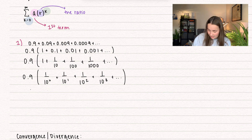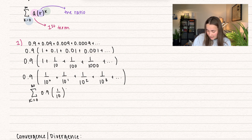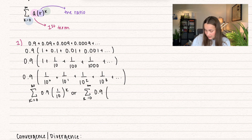From here, we can go ahead and write this out. So we have the summation k going from 0 to infinity, and that's going to be 0.9 multiplied by 1 over 10 to the power of k. Another way you can write this is the summation k going from 0 to infinity of 0.9 times 1 over 10 to the power of k — however you want to write it.